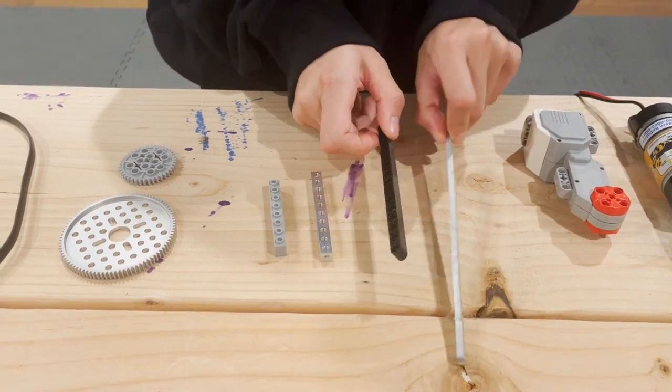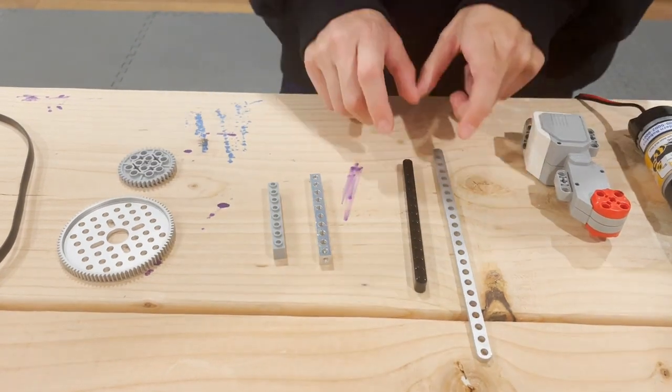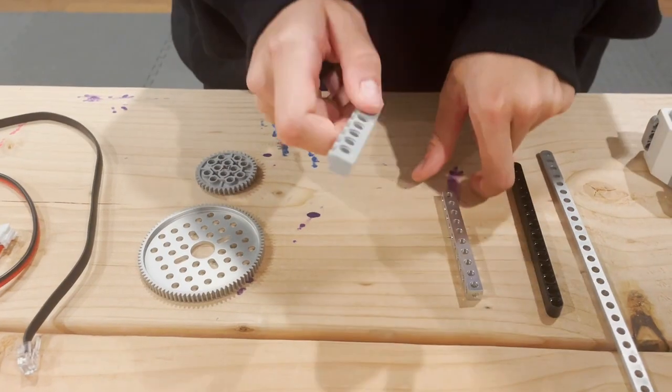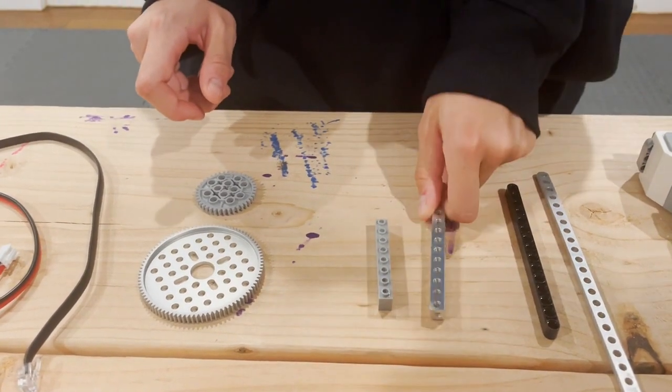They look different but they also look a bit similar, and they're both used for connecting things together. This is a LEGO Technic beam and this is a LEGO square beam.